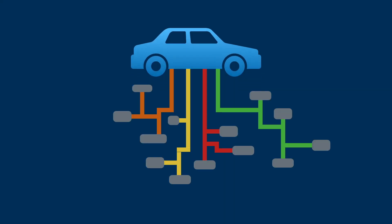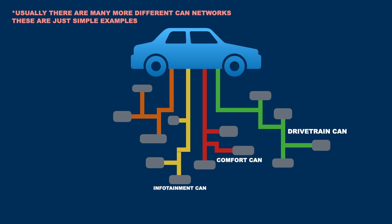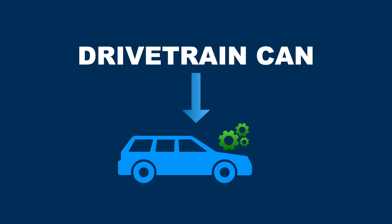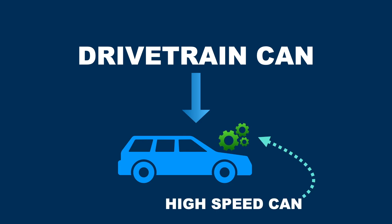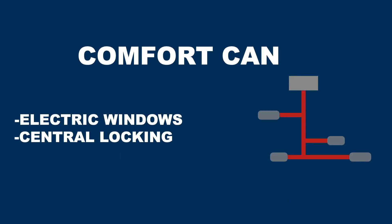In vehicles, the controller area network is often split into different sections with similar areas of responsibility. For example, the drivetrain CAN and the comfort and infotainment CAN. The drivetrain CAN is responsible for the operation of the whole engine, transmission, etc., and therefore needs to use a high communication speed to manage the engine properly. Whereas the comfort CAN operates less critical things like electric windows, central locking, etc.